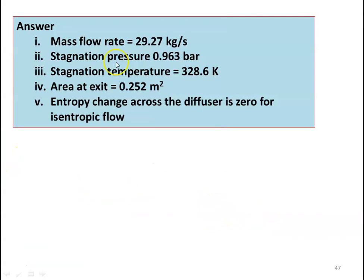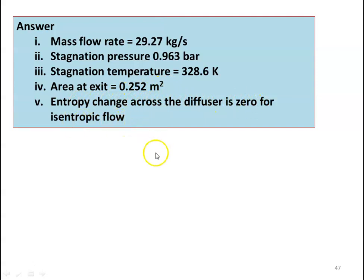The answers to the problem: mass flow rate is 29.27 kilograms per second, stagnation pressure is 0.963 bar, stagnation temperature is 328.6 Kelvin, area at the exit is 0.252 meter square, and entropy change across the diffuser is zero for isentropic flow.